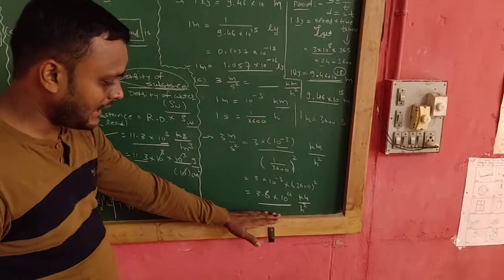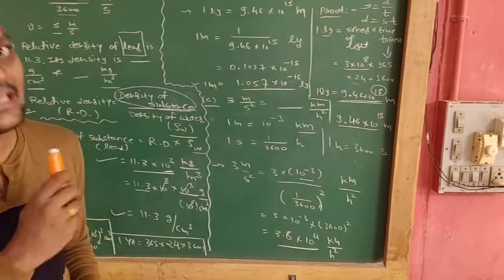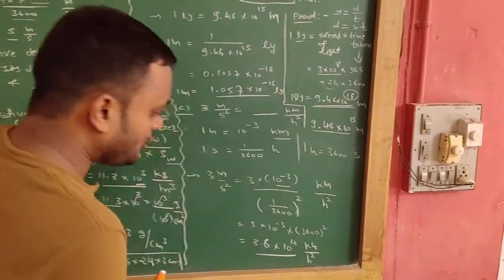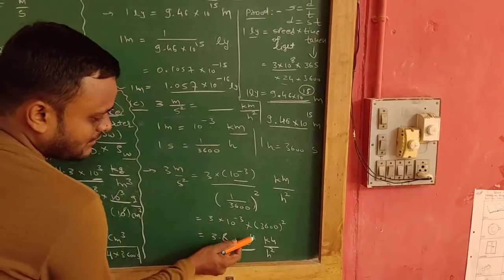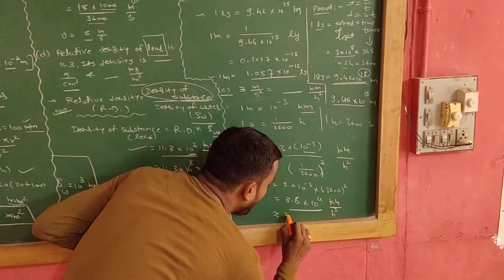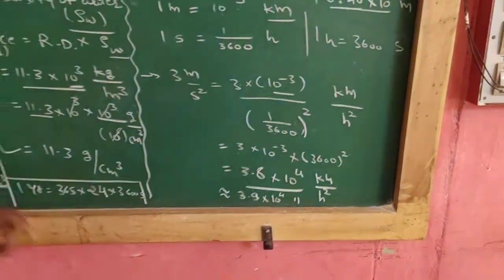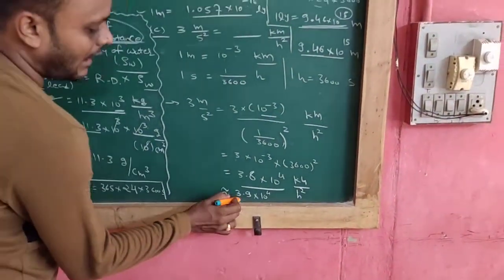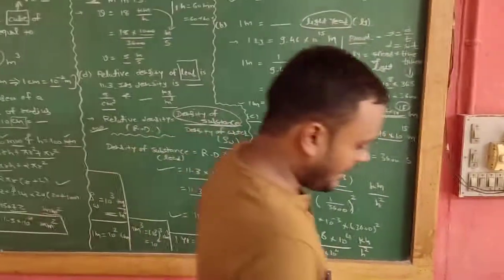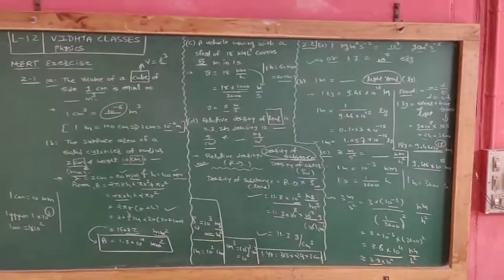You also need to do the conversion carefully here — try it yourself, because this type of conversion is very important for classes 11 and 12. If you have any query, you can write in the comment box and I will provide the solution. The textbook has rounded off the answer and gives 3.9 into 10 raise to 4. The unit remains as it is: km per hour square. We will discuss significant figures and rounding off in detail later. So that is your answer: 3.9 into 10 raise to 4 km per hour square. Thank you.